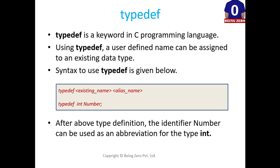Syntax to use typedef is given below. Typedef followed by the existing name and then the alias name. Example typedef int number. Number would be the alias name for the int data type. After above typedef declaration, the identifier number can be used as an abbreviation for the type int.